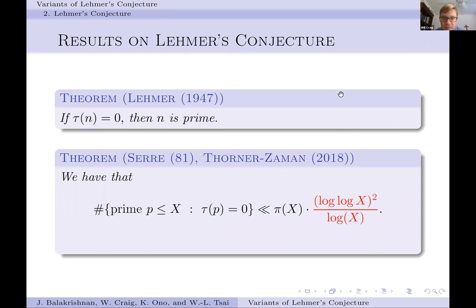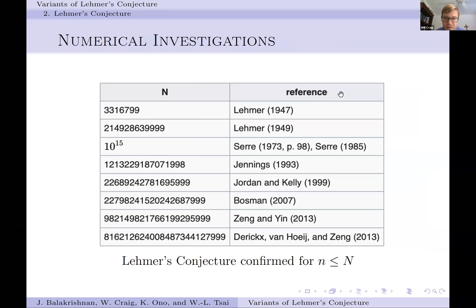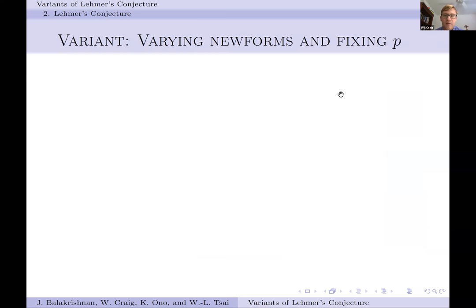Serre in 1981, and many follow-ups including the most recent by Thorner and Zaman in 2018, studied how many primes p can give tau(p) equal to 0. The most recent result is that this count is bounded above by (log log x)^2 divided by log x. In particular, the set of primes p for which tau vanishes has density 0 among the primes. This conjecture also has a lot of numerical support — computations have tested large ranges without finding any instance where tau(n) equals 0.